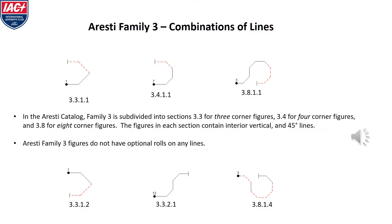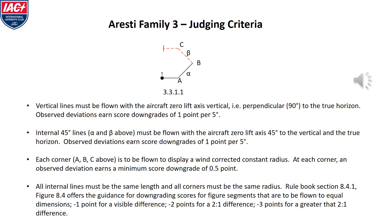Aresti Family 3 figures do not have optional rolls on any lines. When judging Family 3 figures, vertical lines must be flown with the aircraft's zero-lift-axis vertical. Internal 45 lines must be flown with the aircraft's zero-lift-axis 45 degrees to the vertical and horizontal, and are not wind-corrected. Each corner must be flown to display a wind-corrected constant radius. All internal lines must be the same length, and all corners must be the same radius.